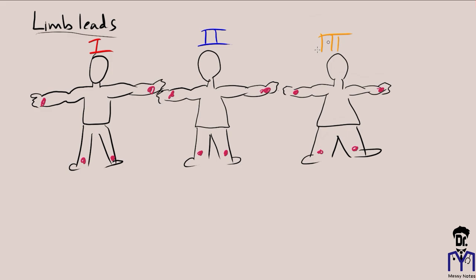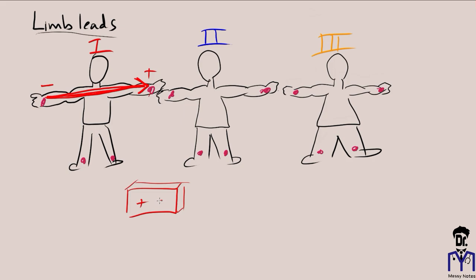To create Lead I, we make the left arm positive and the right arm negative. We're comparing the electrical potential differences between the positive and negative ends, and this creates a lead. The right ankle will always be your ground. The angle of orientation for Lead I will be 0 degrees.